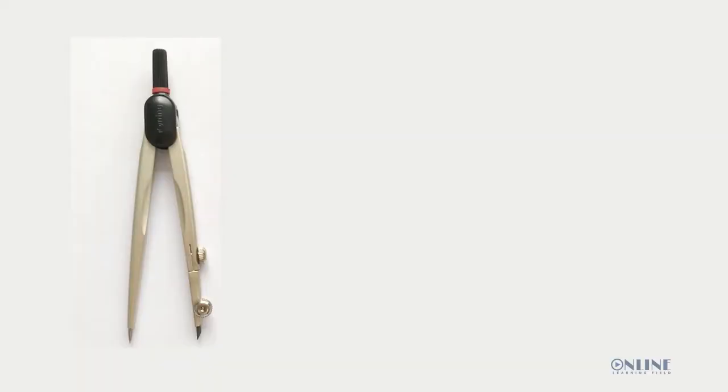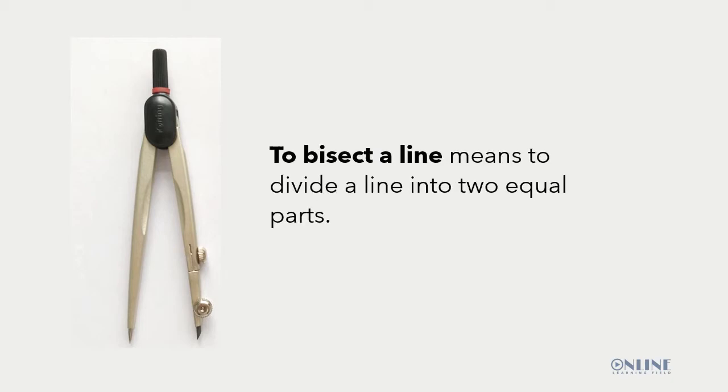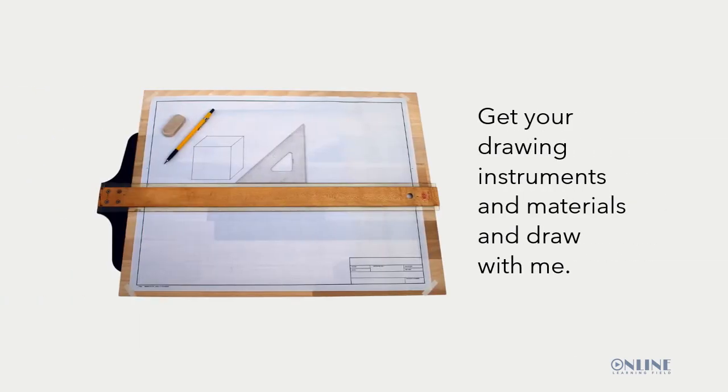Welcome to class. Today you are going to learn how to bisect a line. To bisect a line means to divide a line into two equal parts. Get your drawing instruments and materials so you can draw with me.